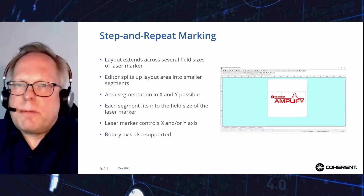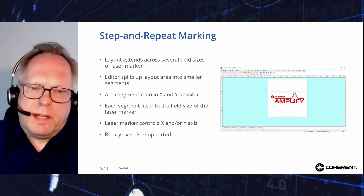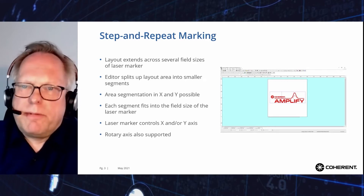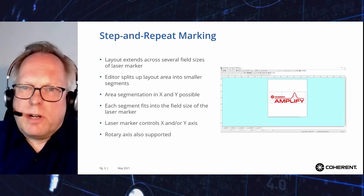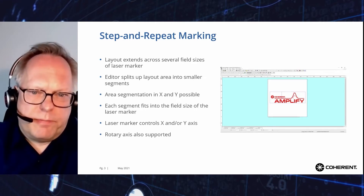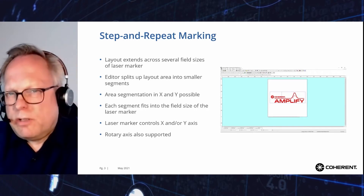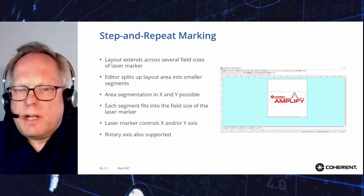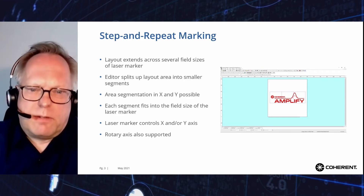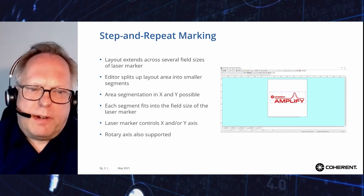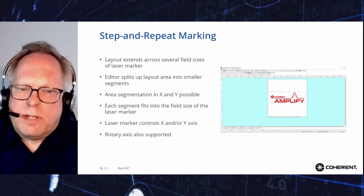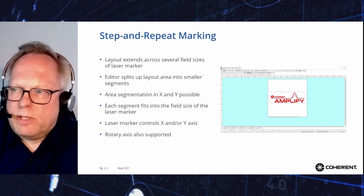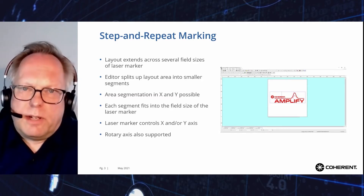Let's start with step and repeat marking. Assume we want to mark our Amplify logo across a marking area that is three times as big as the marking field size of the laser marker. With the Coherence Visual Laser Marker software, this can be accomplished using just one layout. Here, the Amplify logo extends over three marking fields, indicated by three squares in the layout editor.